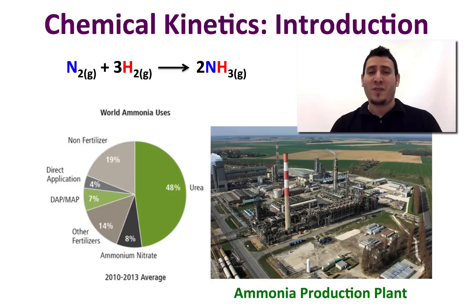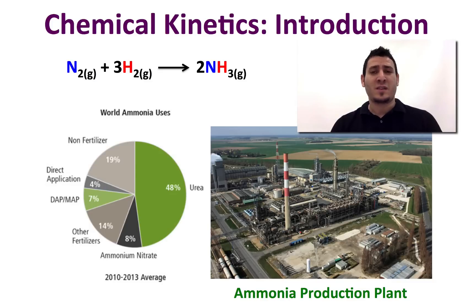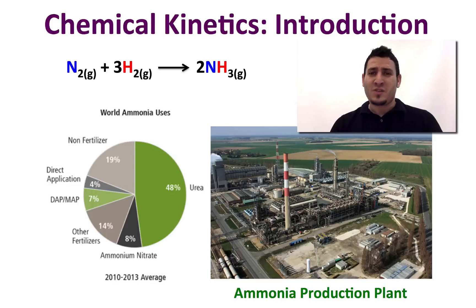For example, the production of 20 million tons a year of ammonia needed for fertilizers — we cannot simply mix nitrogen and hydrogen at 25 degrees and wait for the reaction to happen. This reaction needs to be fast enough to satisfy the needs of the market.